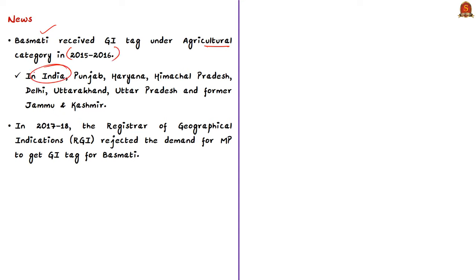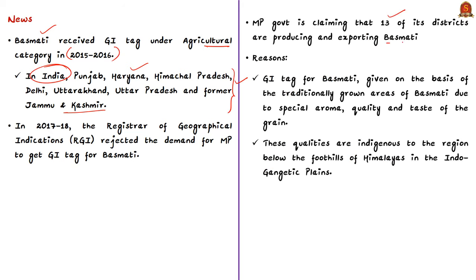In India, this tag extends to the states of Punjab, Haryana, National Capital Territory, Uttarakhand, Uttar Pradesh, and the erstwhile state of Jammu and Kashmir. In 2017-18, the Registrar of Geographical Indications rejected the demand of the Madhya Pradesh government to get a GI tag for its Basmati rice. Subsequently, the Madhya Pradesh government filed a petition in the Madras High Court seeking a GI tag for its Basmati rice, and this petition was also rejected. The present Madhya Pradesh government claims that 13 of its districts are producing and exporting Basmati rice and therefore it should also be included in the GI tag.